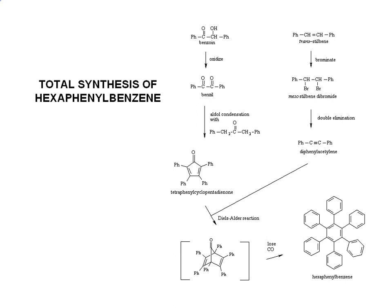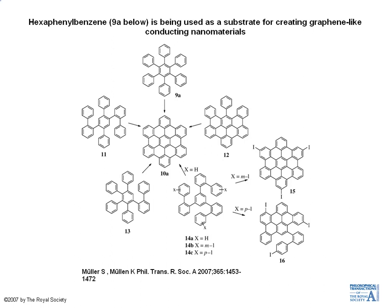Because it's very crowded, hexaphenyl benzene actually forms a propeller shape — all six of those outer rings are out of plane, more parallel to each other, as shown in the picture. This total synthesis is really great because it allows you to use a lot of the techniques you've learned in organic lab and to revisit unique, interesting, and modern chemistry from both lab and lecture.